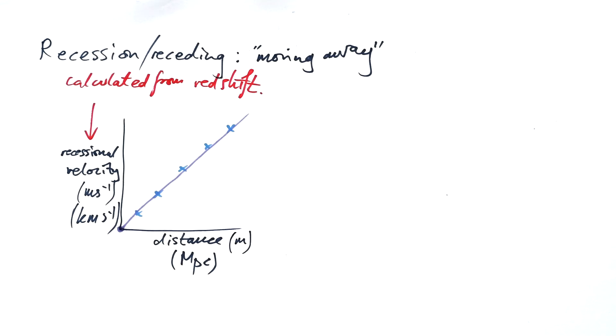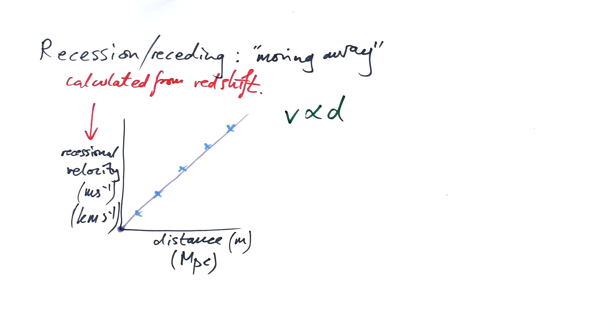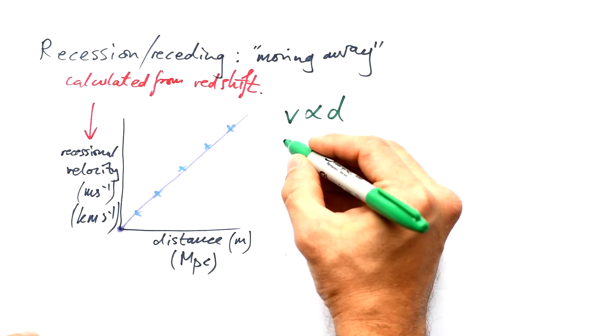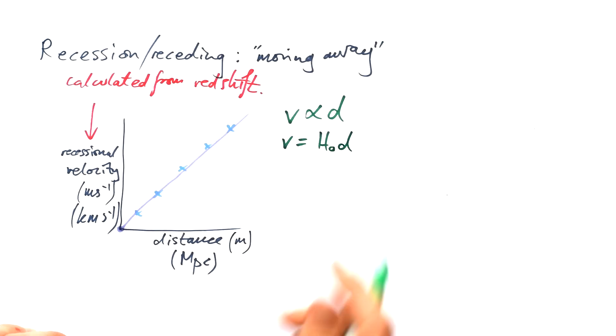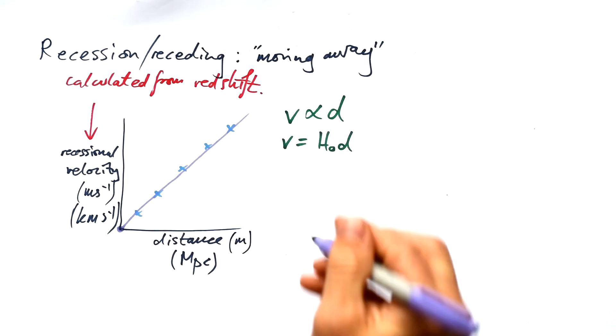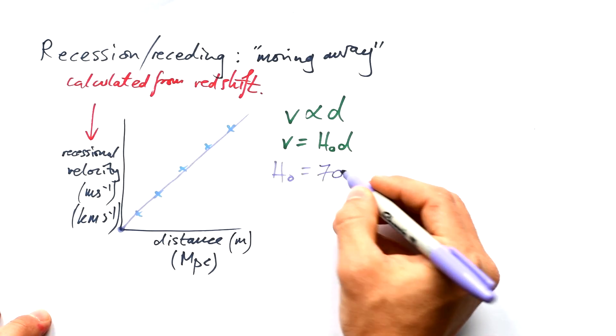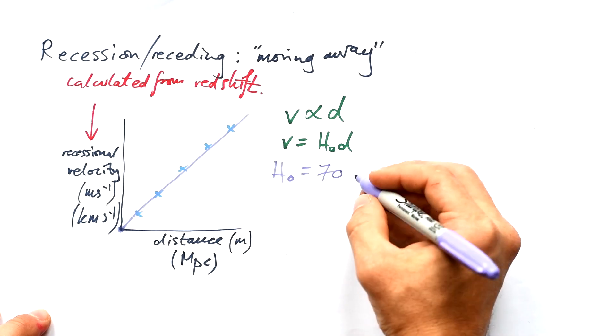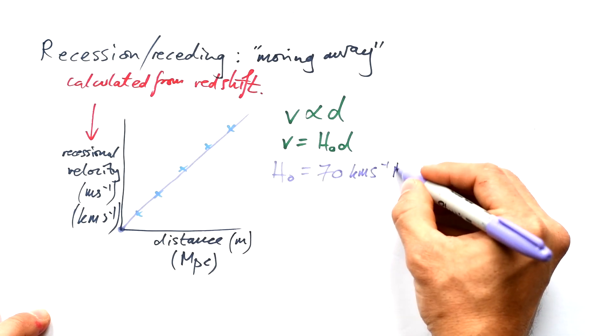So because of this, we can therefore say that v is proportional to d. Recessional velocity is proportional to distance, how far they are away from us. To turn this into an equation, obviously we need a constant, and this is called the Hubble constant. And it turns out that the Hubble constant has a value of around 70, although it does depend on who you ask, but that's 70 kilometers per second per megaparsec.